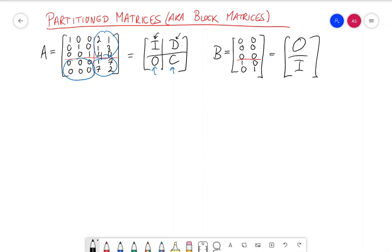For instance, I can do AB instead of having to do this huge multiplication of this five by five matrix times this five by two matrix. I can just pretend that the sub matrices are numbers and do matrix multiplication that way.